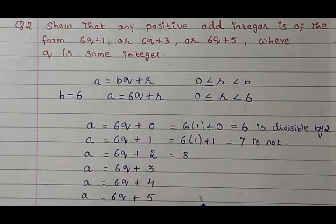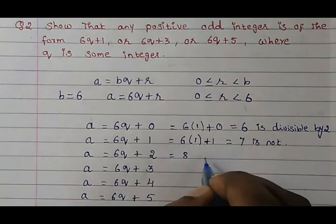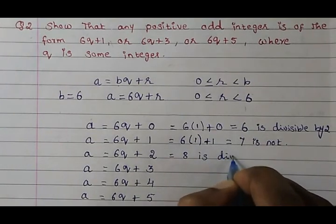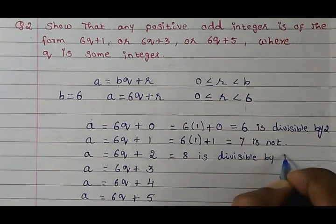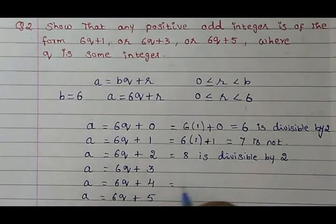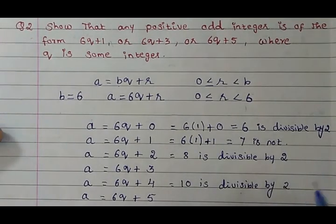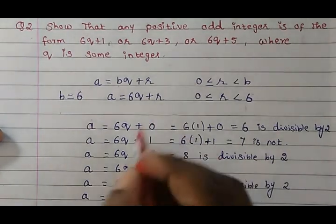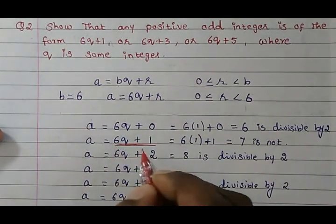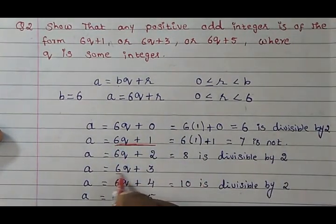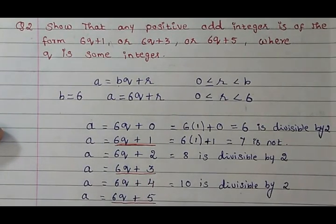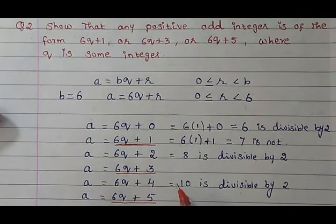So what are the ones not divisible by 2 we saw? 6q+0 is divisible by 2. 6q+2 is also divisible by 2. So which are the ones are not divisible by 2? 6q+1 is not divisible by 2, 6q+3 are not divisible by 2, and 6q+5 are not divisible by 2.